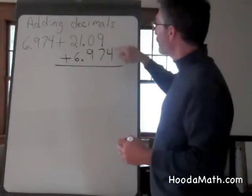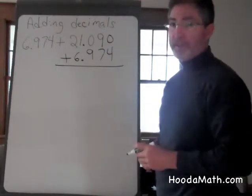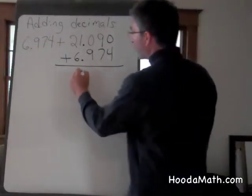It can be helpful to put a zero above the four so no mistakes are made. Before we begin adding, bring down the decimal points.